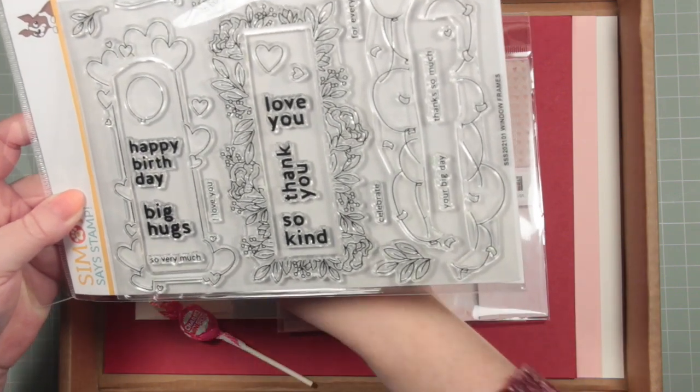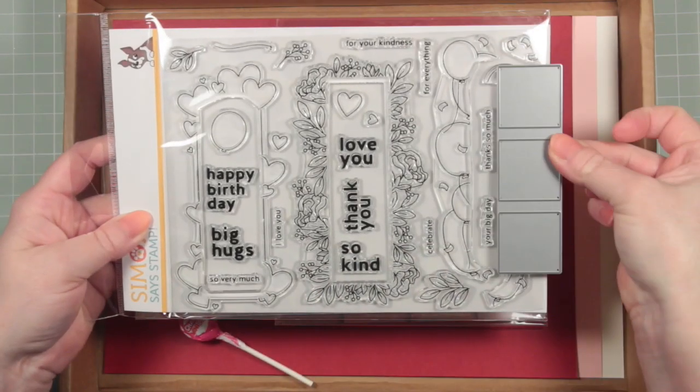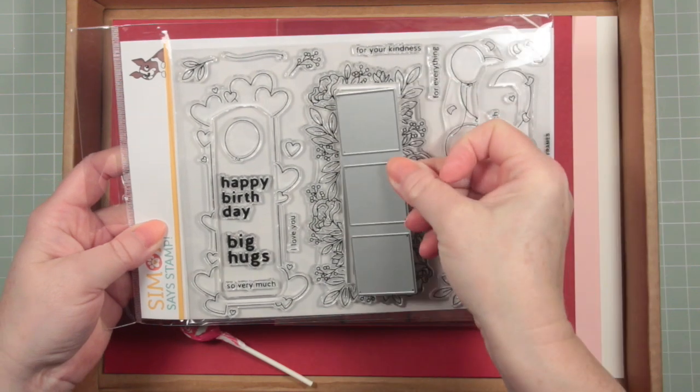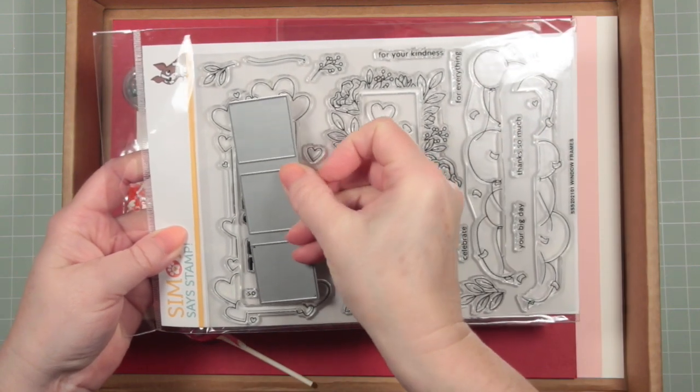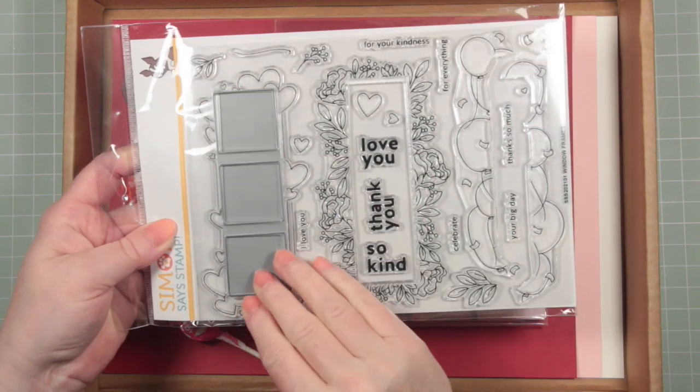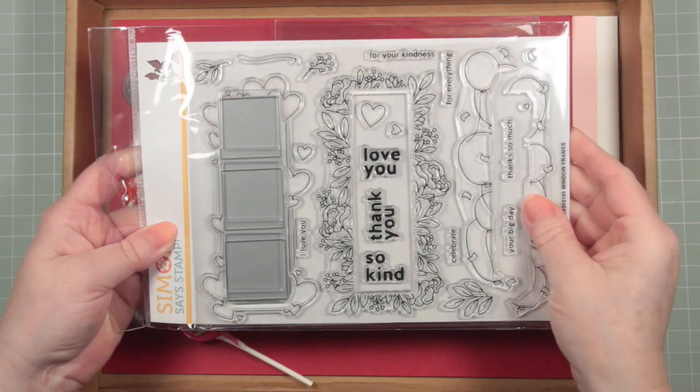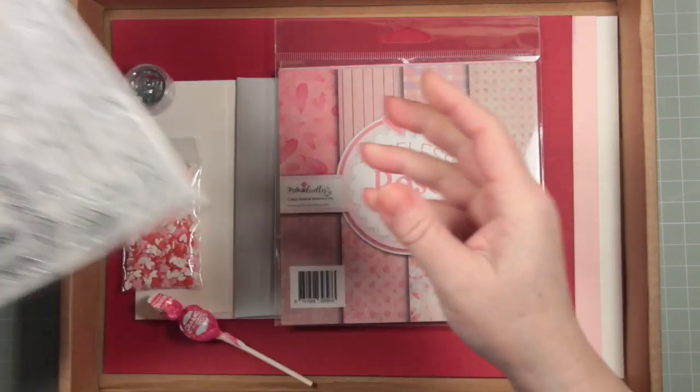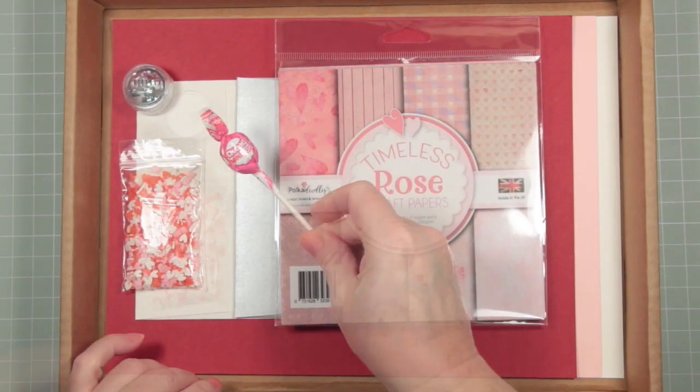These correspond perfectly with a die. The die will cut out three windows and it will fit perfectly within the center of each of these panels. To match with the die there is included a My Favourite Thing Square Shaker Trio pouch and we'll be using that in one of our cards.